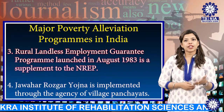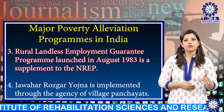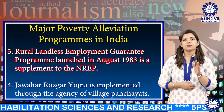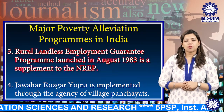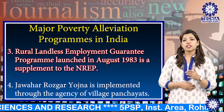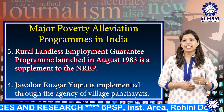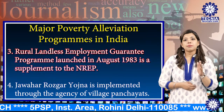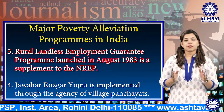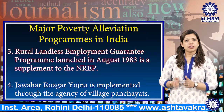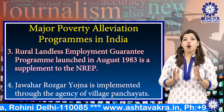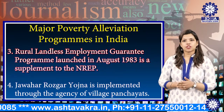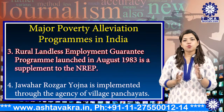The projects under the program include development of minor irrigation facilities, reclamation of waste land, social forestry, and soil conservation. Other projects covered under the program include Indira Awas Yojana and the Million Wells Scheme. NREP and RLEGP have overlapping areas, and it is now proposed to merge the two programs.